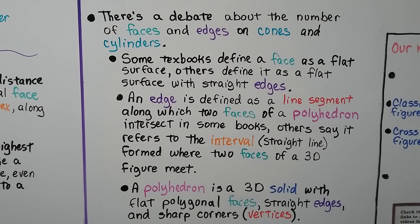Now, there's a debate about the number of faces and edges on cones and cylinders, and even spheres. Some textbooks define a face as a flat surface, so they'll accept any flat surface. Others define it as a flat surface with straight edges. An edge is defined as a line segment along which two faces of a polyhedron intersect in some books. Others say it refers to the interval. It's a straight line formed where two faces of a 3-D figure meet.